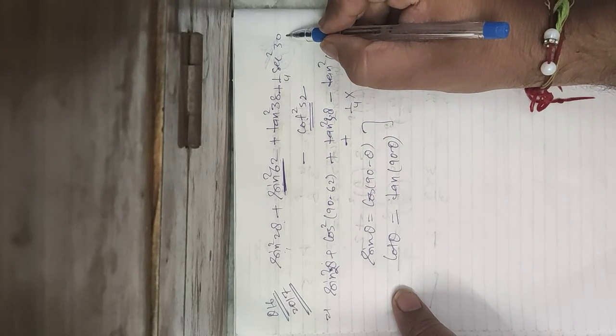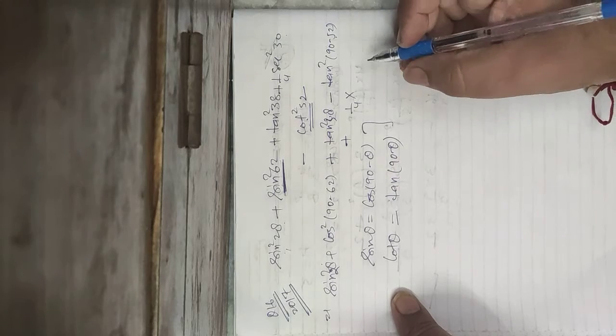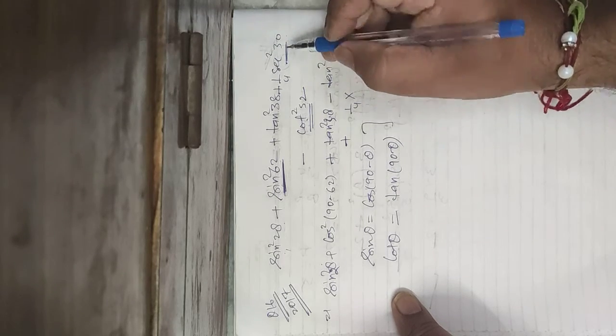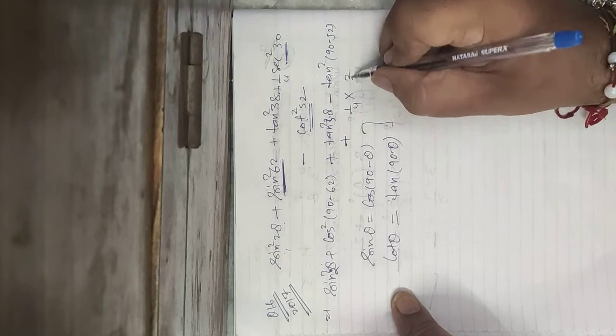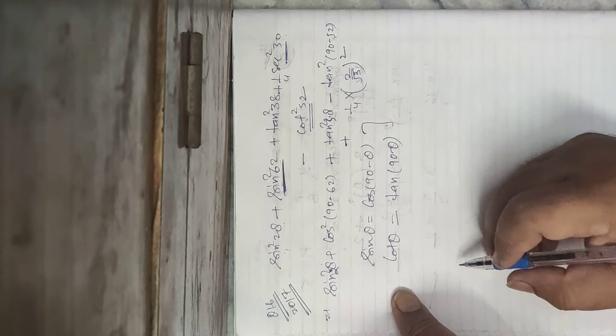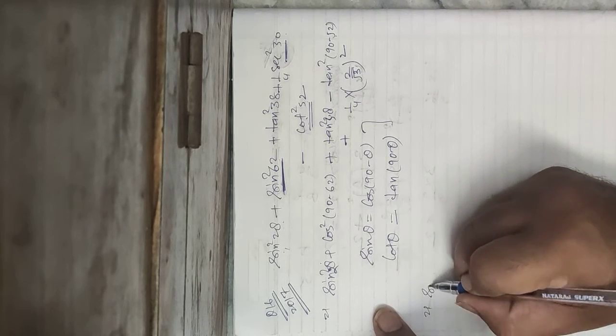Then 1/4 sec²30: you should know what sec 30 is. cos 30 is √3/2, so sec 30 is the reciprocal 2/√3. We take the whole square of (2/√3).